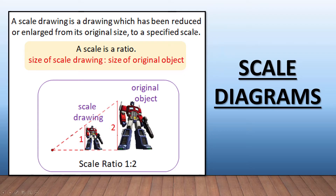We also have a scale diagram. A scale drawing is a drawing which has been reduced or enlarged from its original size to a specified scale, and the scale will be expressed as a ratio. For example, here is Optimus Prime and the scale drawing is on a ratio of one to two — so this is the scale drawing, actually reduced in size from the original object. Please remember your scale is going to be in the form of a ratio.